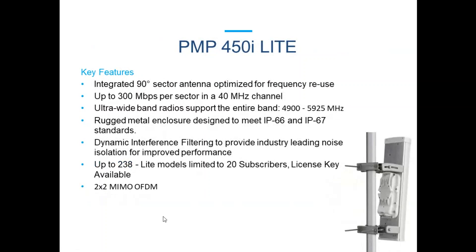A new introduction recently released is the PMP450i Lite. The best way to describe this radio is as the baby brother to the PMP450M CN Medusa we've previously discussed. It also comes with an integrated 90-degree sector antenna — you'll see it has a much slimmer form factor than the 450M. It can push up to 300 megabits per second on a very narrow 40 megahertz channel. It has ultra-wideband radio support between 4,900 to 5,925 megahertz, giving you a lot of channel selection options. It features a very rugged metal enclosure design to meet IP66 and IP67 standards, in line with the 450B SMs and the 450M CN Medusa.